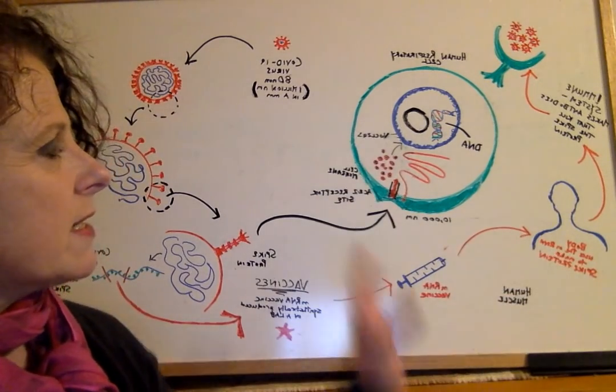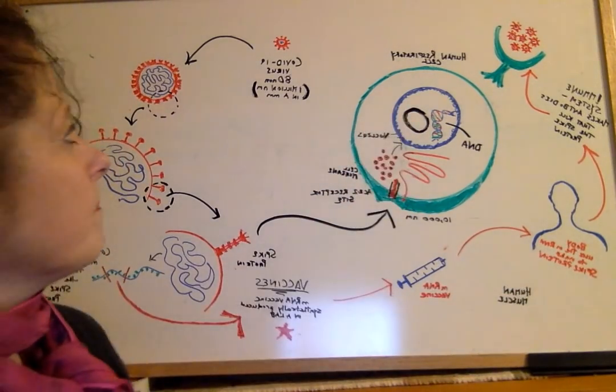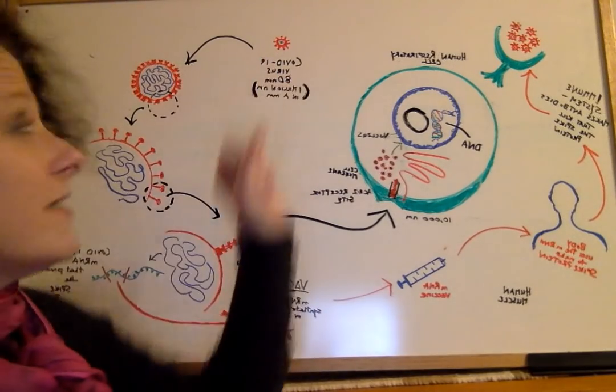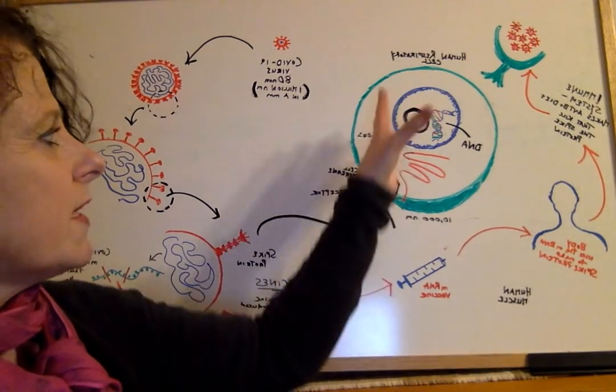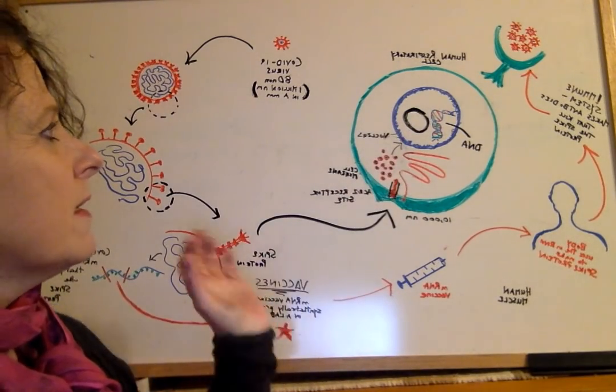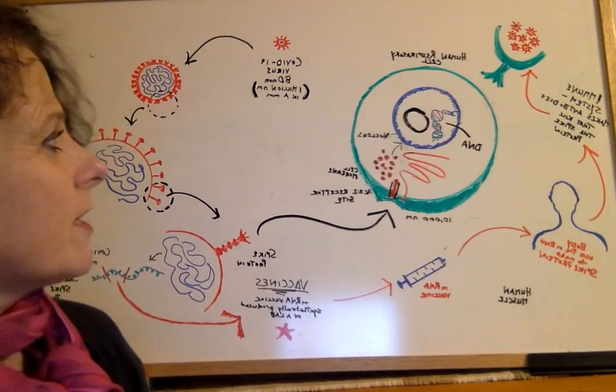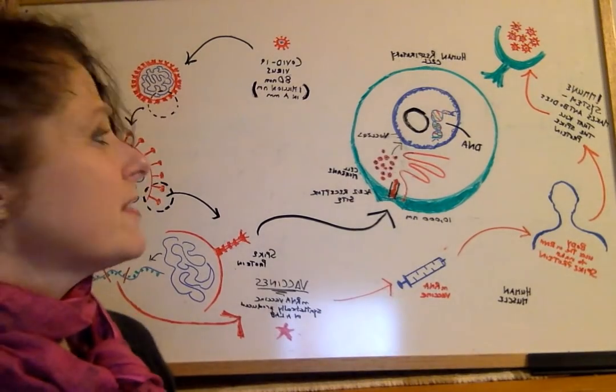What this illustration is: this is the human cell, this is the COVID virus. This is how the COVID virus attaches onto a receptor site and gets into the human cell. And the rest of the story we'll talk about later. So let's get started with some basic biology.